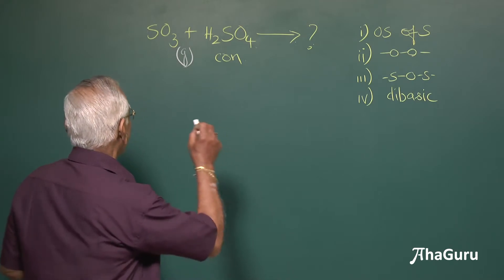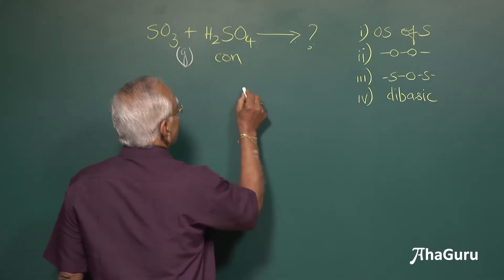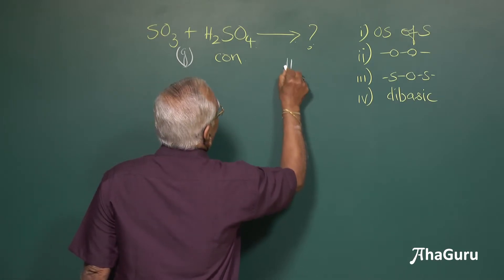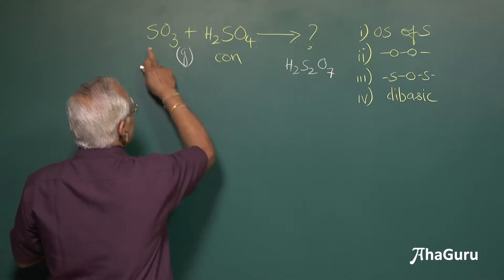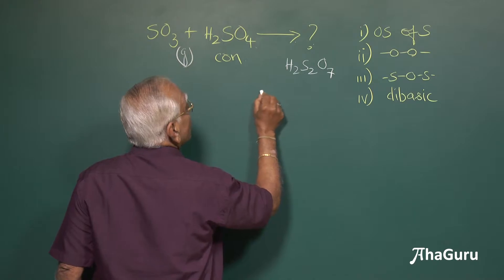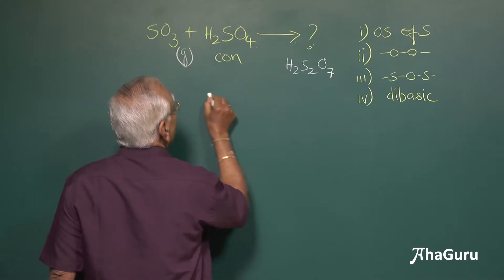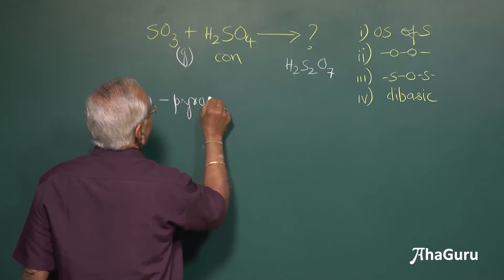Now let us look at the product formed. Now when sulfur trioxide dissolved in sulfuric acid, you get H2S2O7, you just add them together H2S2 and O7 and this is called pyrosulfuric acid. This is called pyrosulfuric acid.